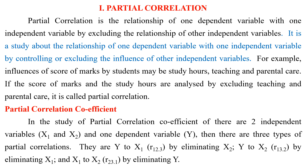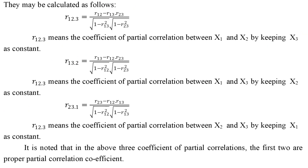In the study of partial correlation coefficient, if there are two independent variables x1 and x2 and one dependent variable y, then there are three types of partial correlations: y to x1 (r12.3) by eliminating x2, y to x2 (r13.2) by eliminating x1, and x1 to x2 (r23.1) by eliminating y.